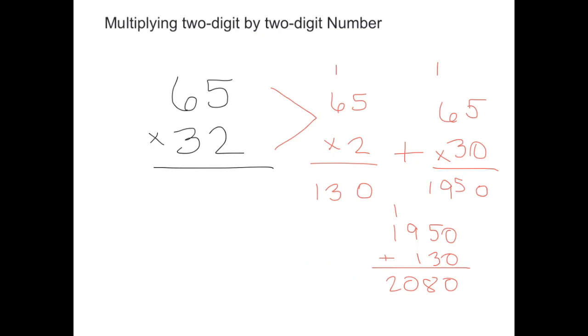Following traditional methods, we're going to multiply the number on the bottom in the ones place by the two digits at the top. Two times five is ten, and two times six is twelve, plus one equals thirteen.